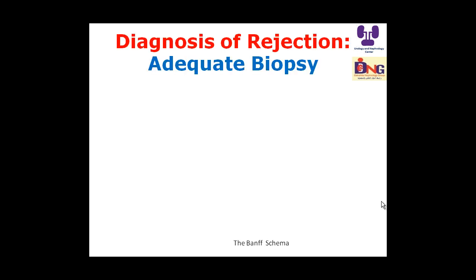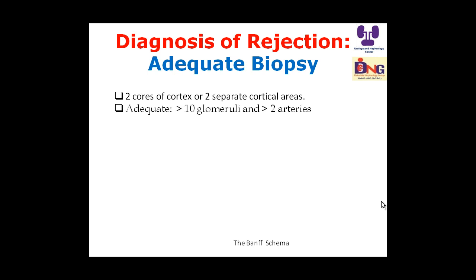For a biopsy to be adequate, it should be representative — containing two cores of cortex or two separate cortical areas, more than 10 glomeruli, and more than two arteries. If we have many glomeruli but no arteries, we may miss a vasculitis diagnosis.